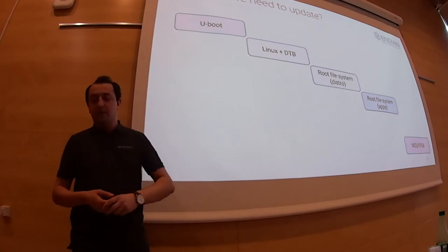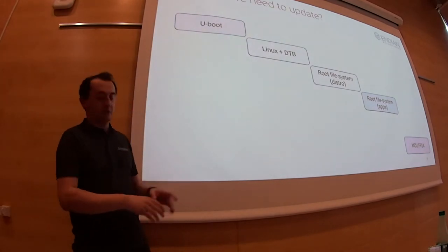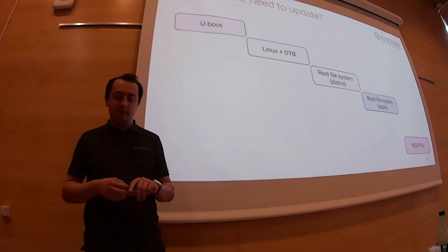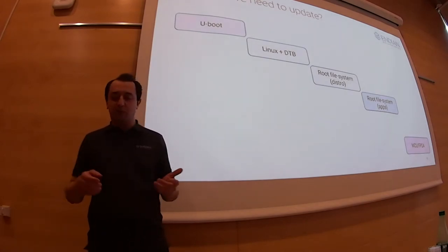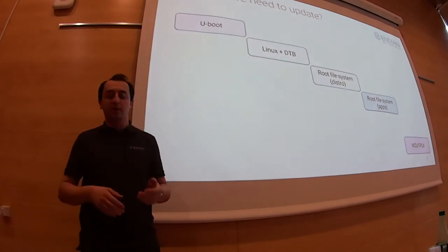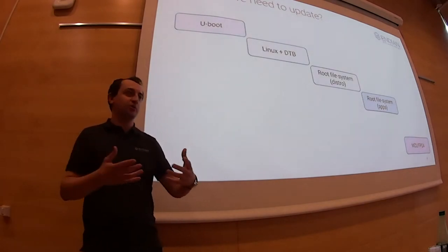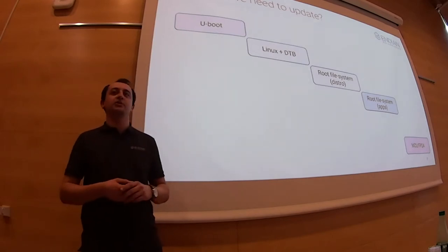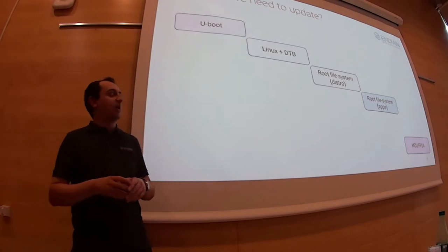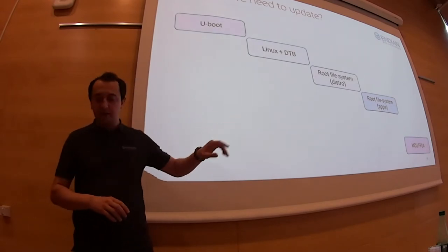A typical embedded Linux device — simplified — generally has: some kind of bootloader, most cases U-Boot; the Linux kernel; a device tree (especially for ARM devices); a root file system containing your init manager, network manager, and all the software you don't write yourself; and then some kind of custom application on top. In some cases there's also an MCU or microcontroller alongside Linux that also needs software updates.